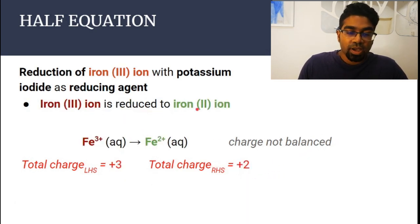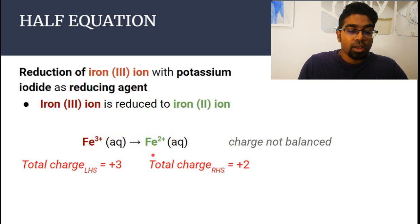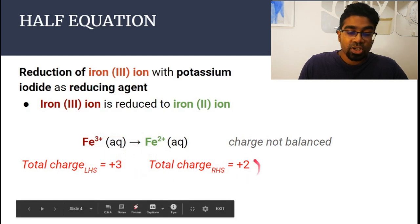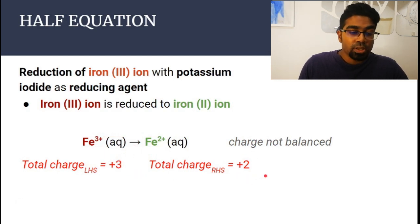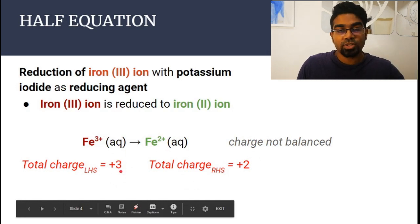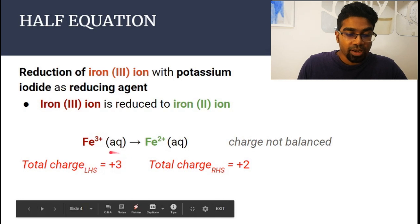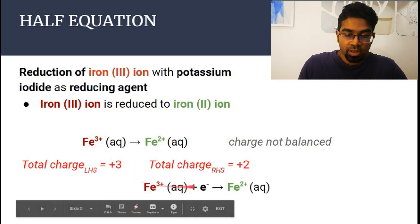For the reduction of iron-3 ion to iron-2 ion, Fe³⁺ becomes Fe²⁺. The number of atoms are balanced — one iron atom on the left and one on the right. However, the charge is not balanced. The charge on the left is plus 3 and the charge on the right is plus 2. In order to balance it, we can only add electrons. An electron consists of one negative charge, so we add one electron to the left to make plus 3 become plus 2. And so we have our other half equation.